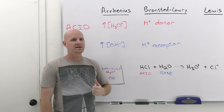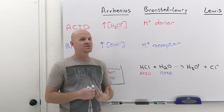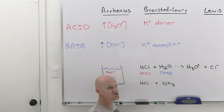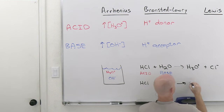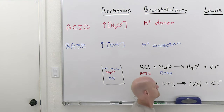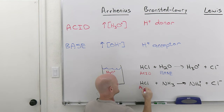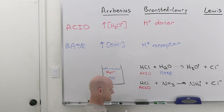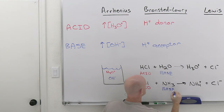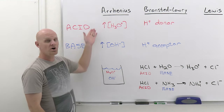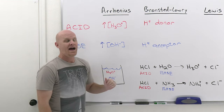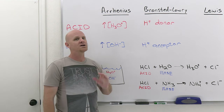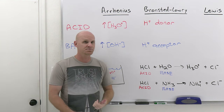Bronsted-Lowry also says acid-base reactions don't have to involve water. We could mix HCl and ammonia in the gas phase — not aqueous solutions at all — and you still get a reaction. HCl is still the acid; it gives away an H+ to become Cl-. NH3 accepts it and turns into NH4+, making NH3 the base. So all the acid-base reactions that Arrhenius would have called acid-base reactions, Bronsted-Lowry will also call those. But even reactions that don't involve water, Bronsted-Lowry will now consider those acid-base reactions as well. This is the most useful working definition for identifying acids and bases.